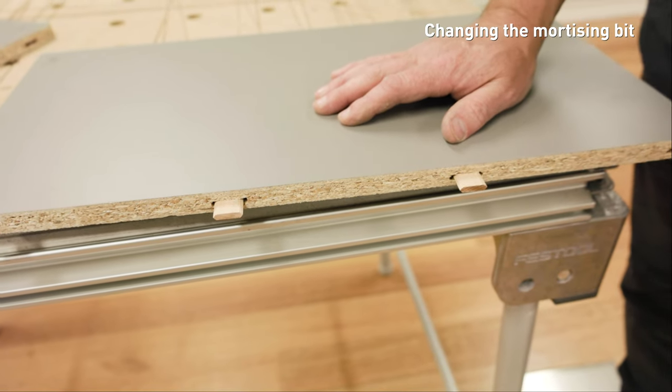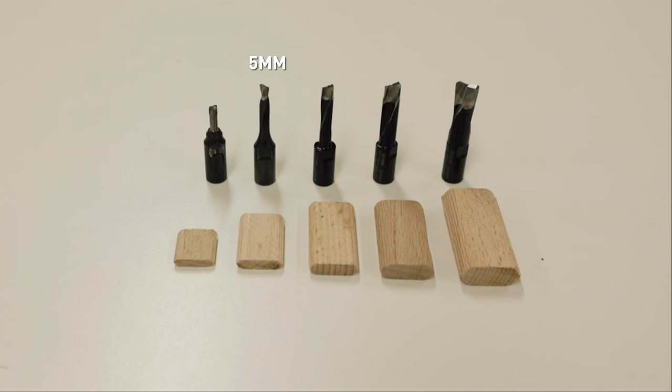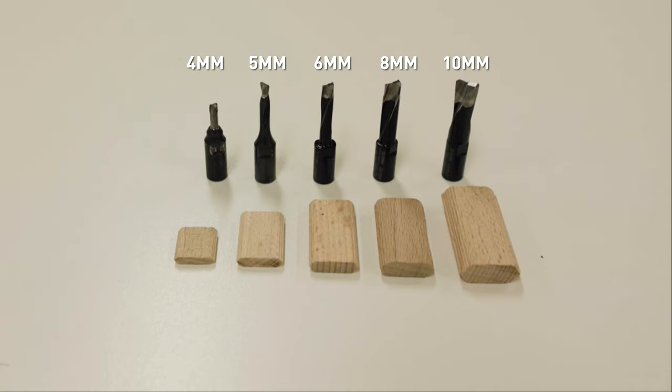Different mortising bits are available for a variety of different domino tenon sizes. The DF500 comes equipped with a 5mm bit and 4, 6, 8 and 10mm bits are available as an option.